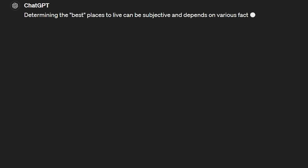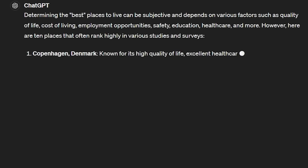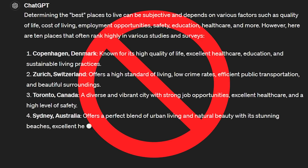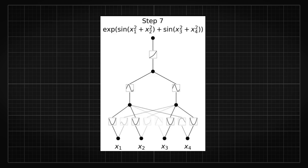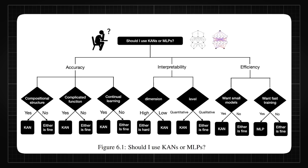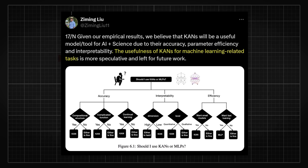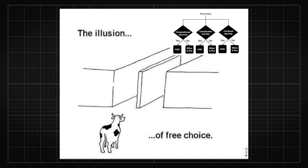Unfortunately, what KAN has been tested on so far doesn't include sequential data, so we don't really know if KAN would work as the building block for language models. They also put out a flowchart for people to reference when to use KAN, but even the authors admit the use cases are more speculative, and at the end of the day, it's just design choices — just like MLP in some cases.